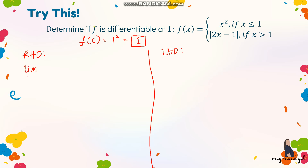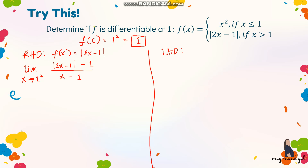For the right hand derivative, take the limit as x approaches 1 from the right. Since we want x greater than 1, use the second sub-function: absolute value of 2x minus 1. Substituting: absolute value of 2x minus 1 minus 1, all over x minus 1. Since x is greater than 1 here, the absolute value can be removed, giving 2x minus 1 minus 1 all over x minus 1.